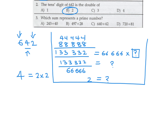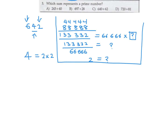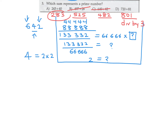Which sum represents a prime number? First let's figure out the sums: this is 283, this is 525, this is 682, and this is 801. 525 is clearly divisible by 5 — not prime. 682 is even, divisible by 2 — not prime. 801 is divisible by 3. Therefore by process of elimination, 283 would be the prime number, so number 3 is A.